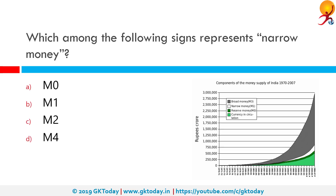Which among the following signs represents narrow money? Narrow money is a category of money supply that includes all physical money such as coins and currency, demand deposits and other liquid assets held by the central bank. It is classified as M1.